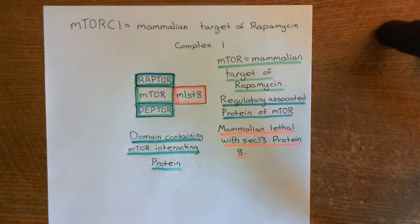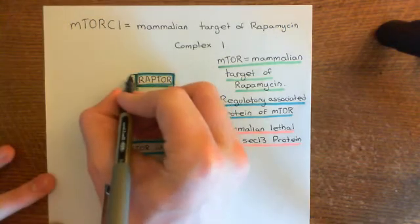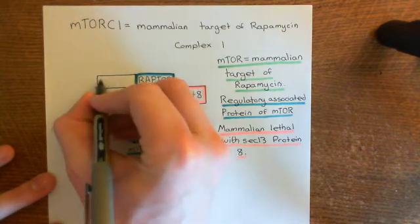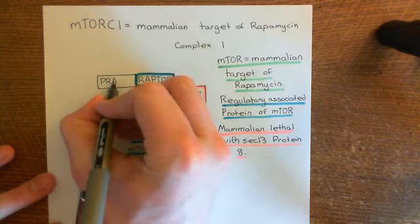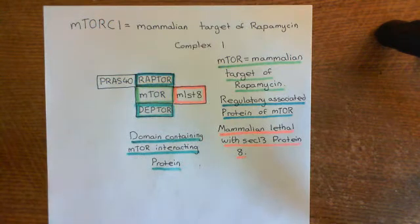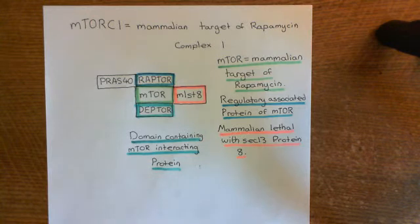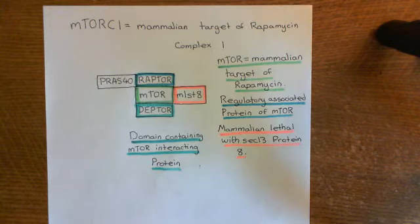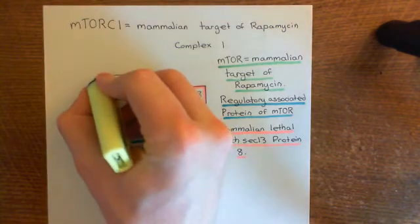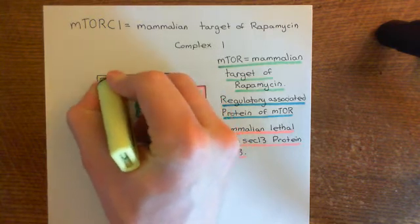Finally, attached to the RAPTOR protein, there is another protein known as PRAS40. PRAS40 is part of the inactive mTORC1. However, it's going to be cleaved off when we actually activate mTORC1 — although that isn't the main step in activation. In the active mTORC1, PRAS40 is removed, but there are more important steps to activate mTORC1.